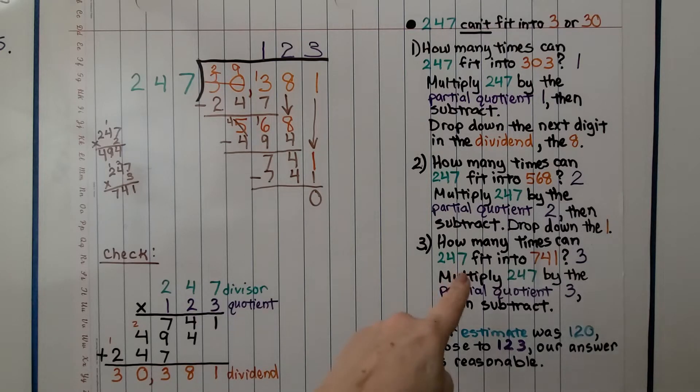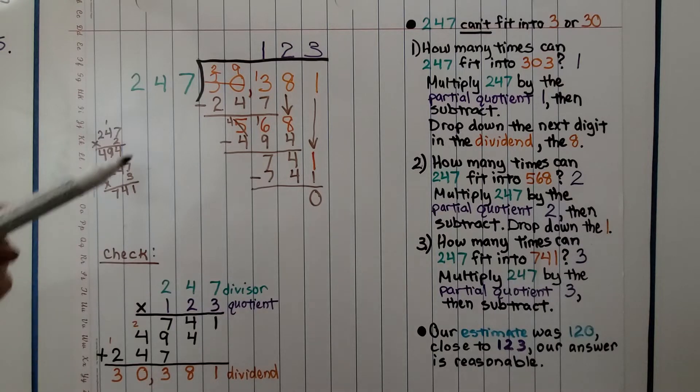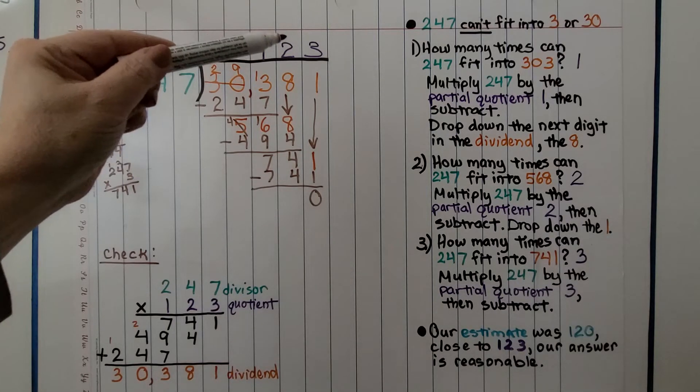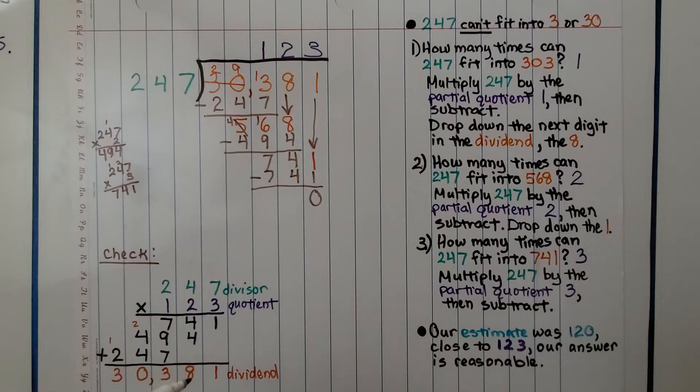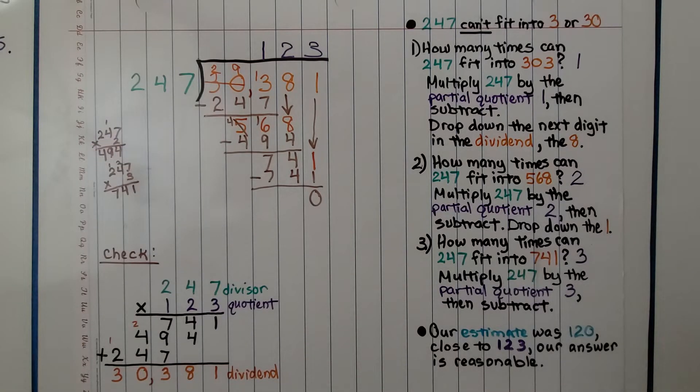Now, if you remember, our estimate was 120. That's very close to 123, so our answer is reasonable. But we can check it with multiplication. We multiply the divisor times the quotient. And if it equals the dividend, then we know we did it correctly. And I multiplied them, and yes, it came out exactly the same amount as the dividend. We know we did the division correctly.